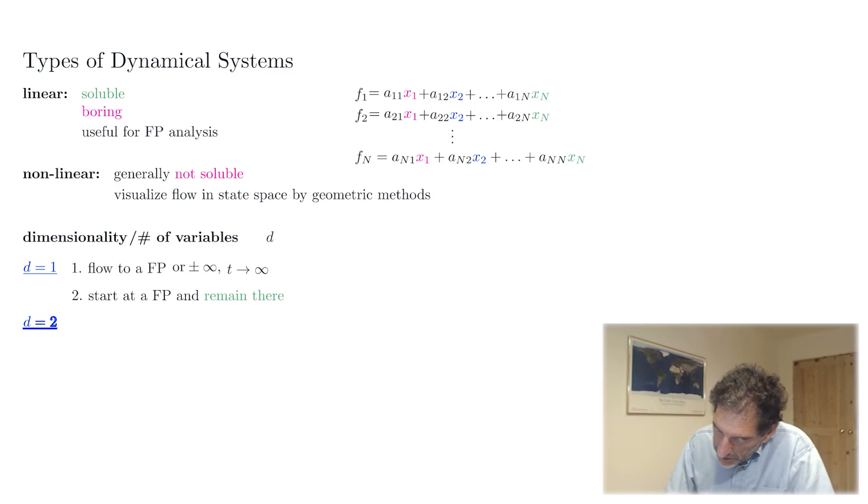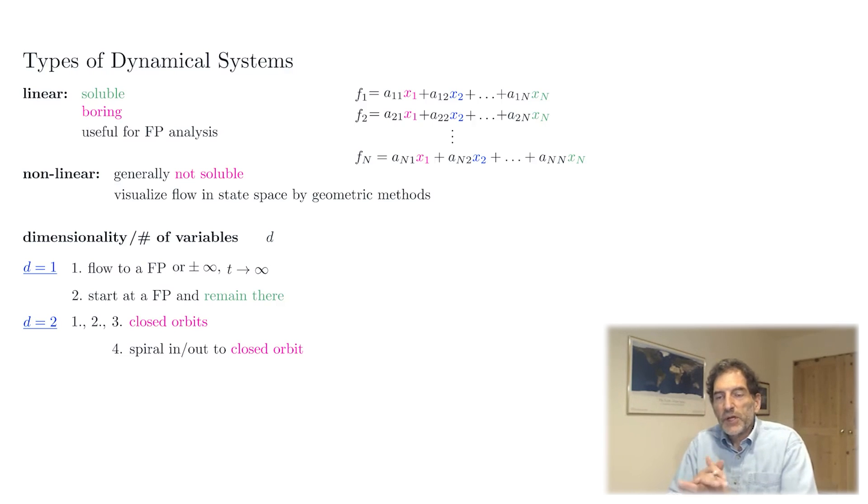In two dimensions, it's a little bit more interesting because in addition to one and two also holding, there is three: that you can have closed orbits. Or four, one can have spiral in or spiral out to a closed orbit. Another feature of two dimensional dynamical systems is this feature that if you have some kind of a closed trajectory in state space, say something like this,